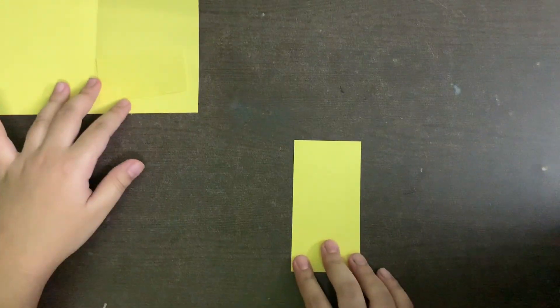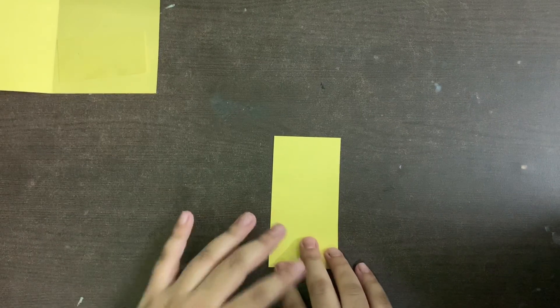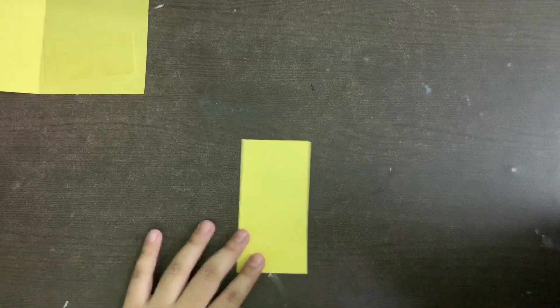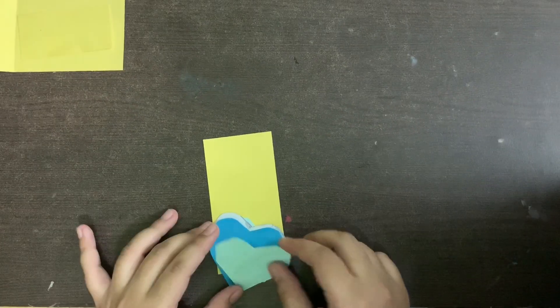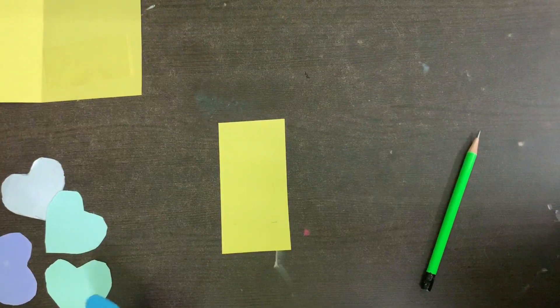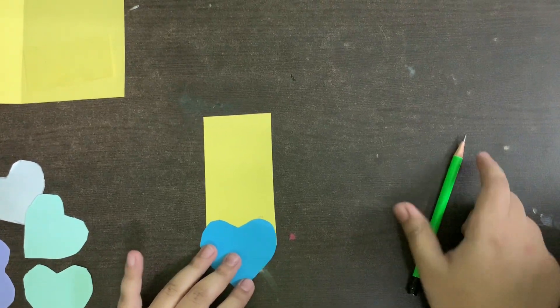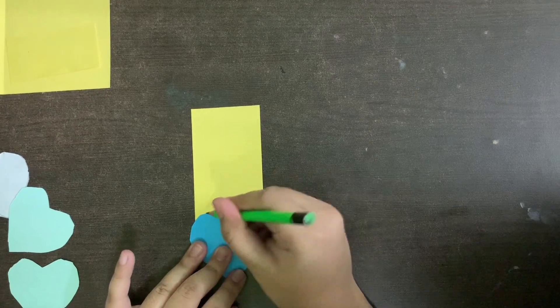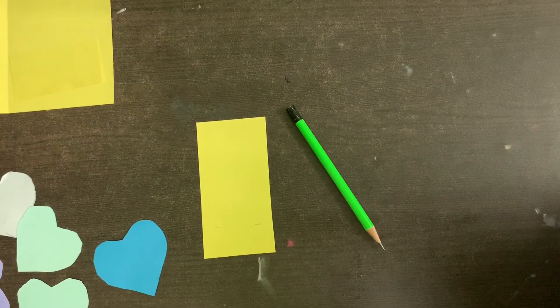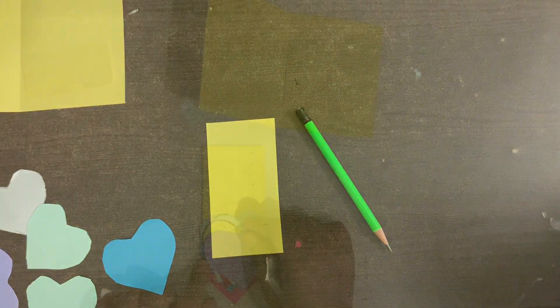And then you need to put aside the card and the smaller strip. And then you need to place the hearts on the other strip. Then you need to take a heart and place it and then mark on the top of it. And then you need to leave one centimeter gap for each card.